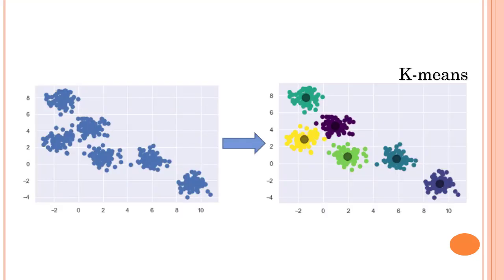So here's how our dataset looks. What I'm showing you right now is a two-dimensional dataset. K-means is very powerful and can handle multi-dimensional datasets, but here we only have two dimensions, x and y, which makes it easy to plot. This is what the dataset looks like without using k-means — you can already see visually that there are some groups which should be belonging to similar kinds.